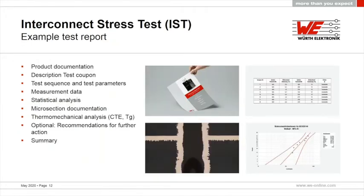Here is an example of a test report overview. It includes product documentation showing where the test coupon was in your panel layout, a description of the test coupon, and the test sequence and parameters — including measured resistance change, which cycle it occurred in, which circuit was measured, and how many cycles the coupon took to fail.